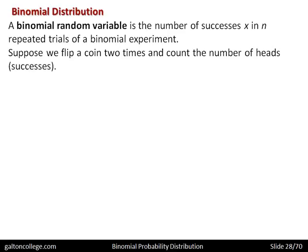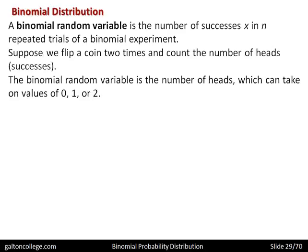Suppose that we flip a coin twice and count the number of heads — the number of successes. The binomial random variable is the number of heads, which can take on the values 0, 1, or 2. We toss the coin twice: we might get two tails — no heads. We could toss the coin twice and get one head. Or we could toss the coin and get two heads. So when tossing the coin twice, the possible outcomes are zero, one, or two heads.